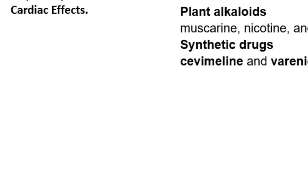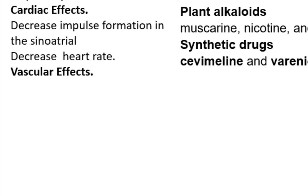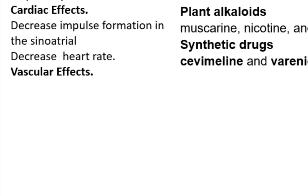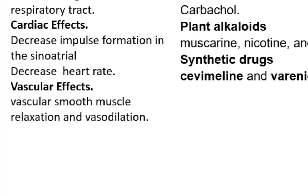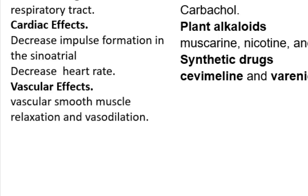Muscarinic receptor agonists decrease impulse formation in the sinoatrial node by reducing the rate of diastolic depolarization; as a result, they slow the heart rate. Regarding vascular effects, activation of nitric oxide synthetase and the formation of nitric oxide activates guanylate cyclase to increase the formation of cyclic guanosine monophosphate (cGMP), leading to vascular smooth muscle relaxation and vasodilation.